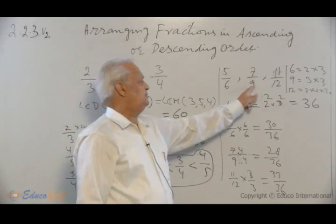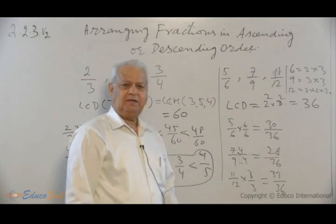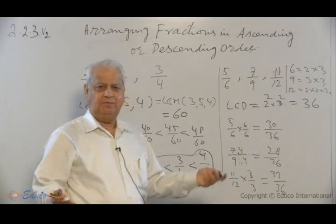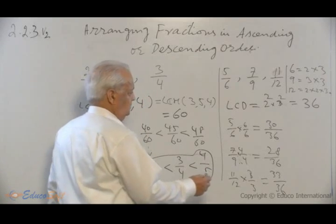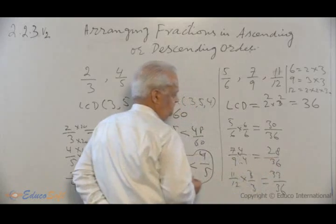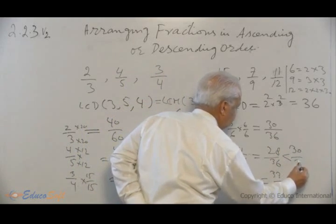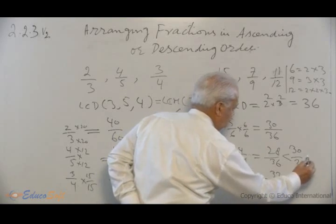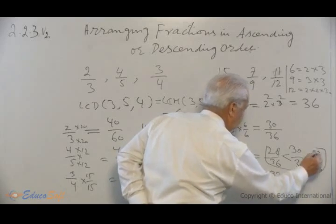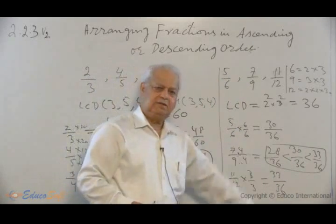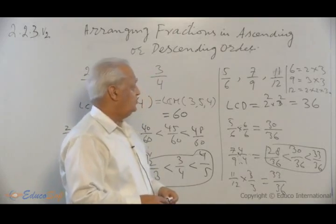So once you have written all the fractions into equivalent fractions with the same denominator, then comparison is easy. Compare their numerators. This is the smallest, 28 over 36, and the next largest is 30 over 36, and the next largest is 33 over 36. And then you can replace these numbers by the original values. And that gives you the ordering.